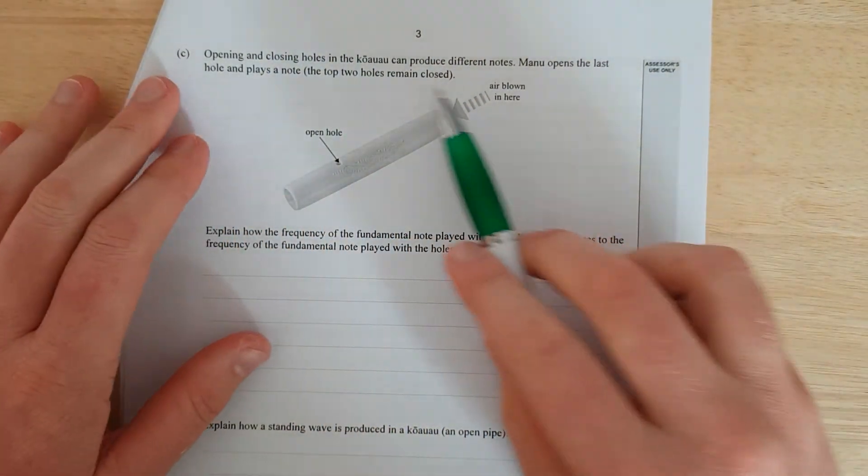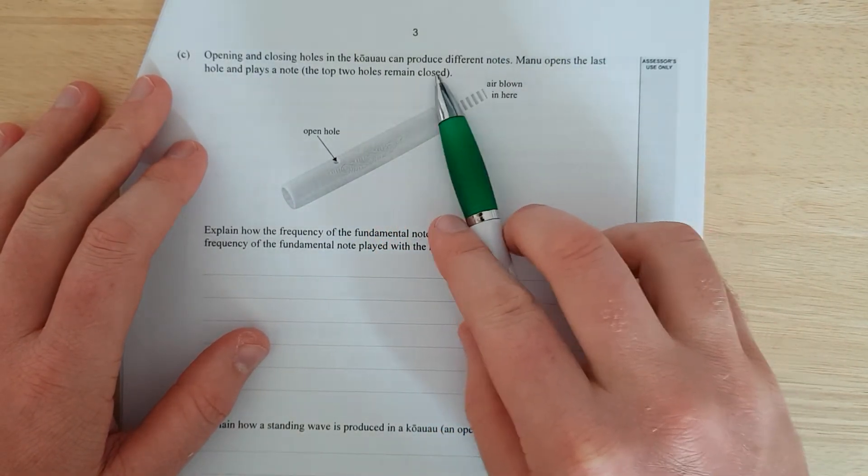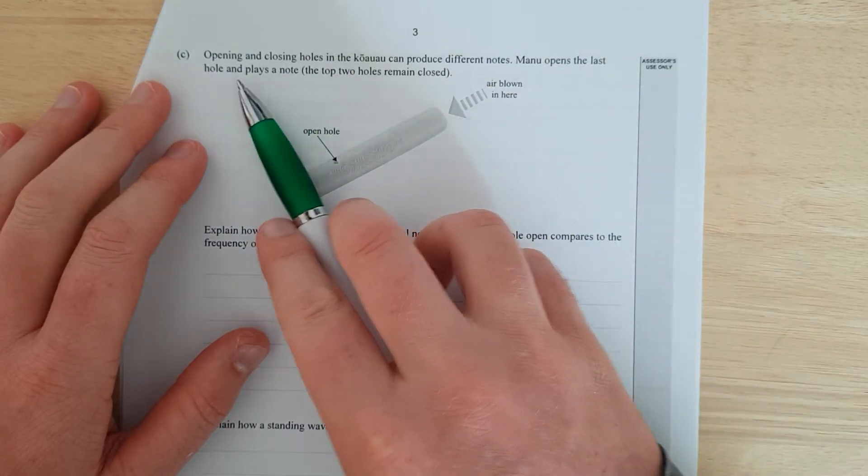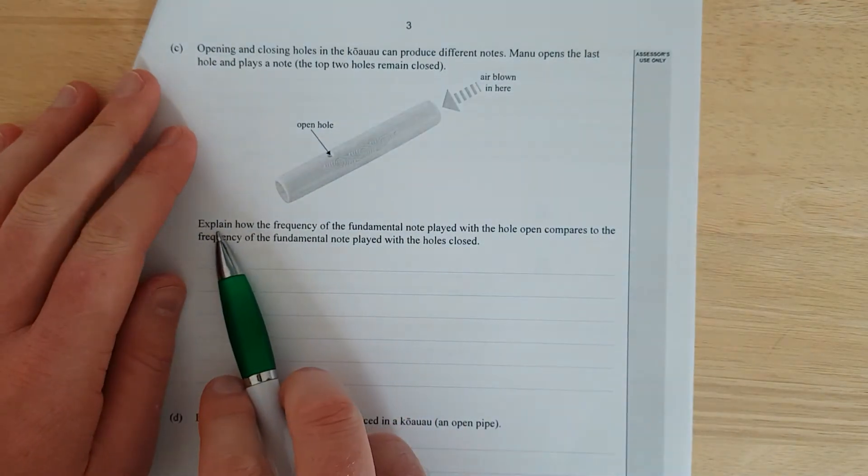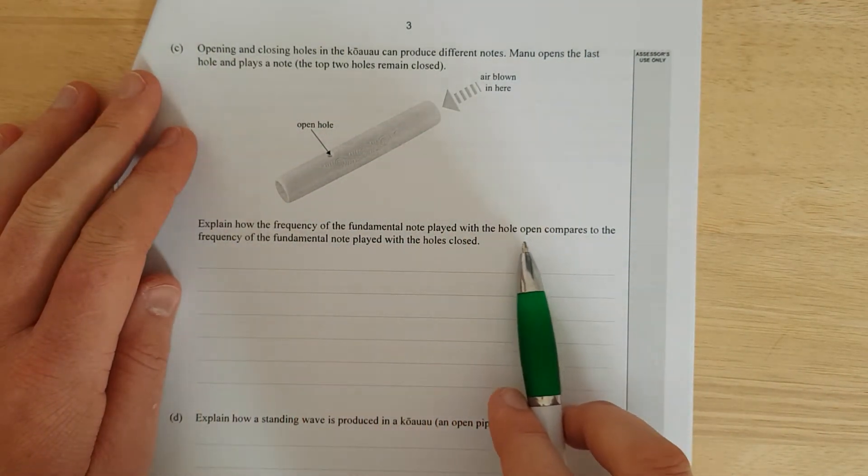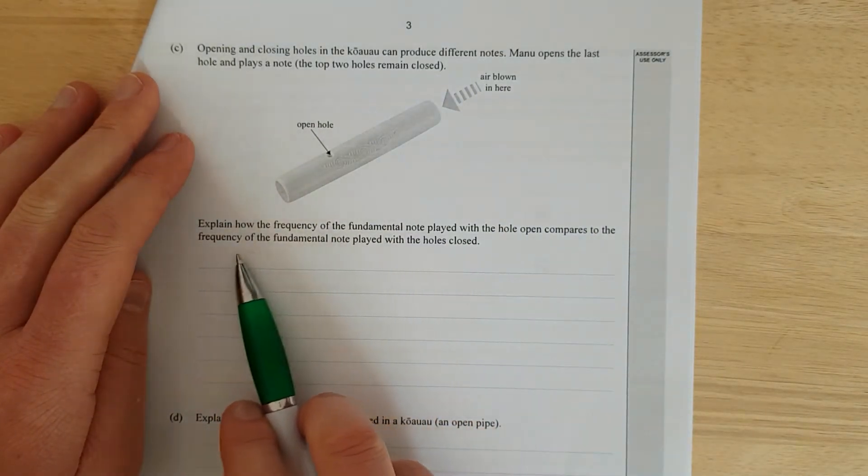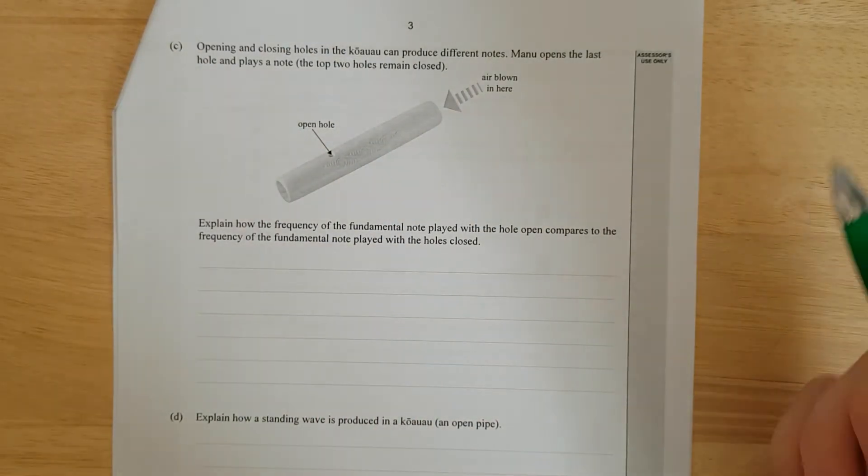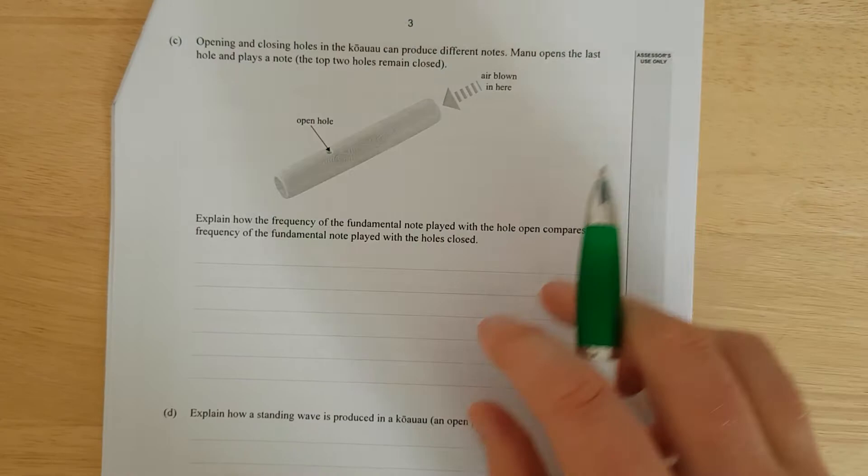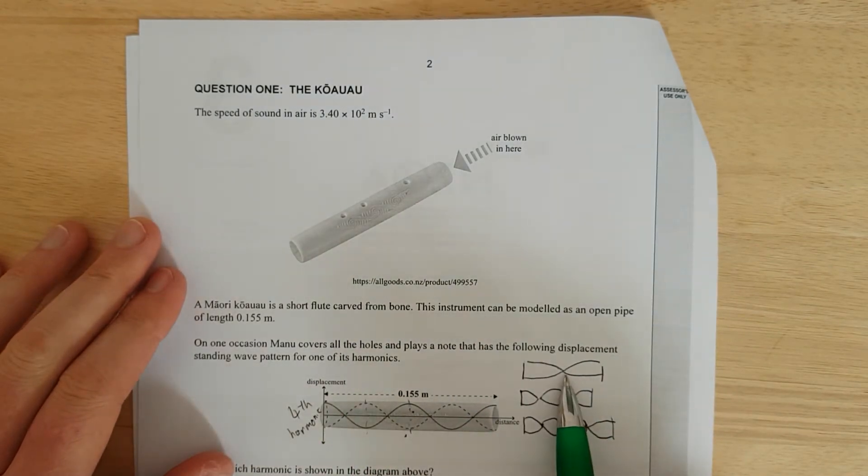Opening and closing the holes in the kōraura can produce different notes. I hope I got that correct. Manu opens the last hole and plays a note. Explain how the frequency of the fundamental note played when the hole opened compares to the frequency of the fundamental note played when the hole was closed. Man, it's hard to read when I'm talking when I'm reading. Two different parts of the brain trying to work at once.